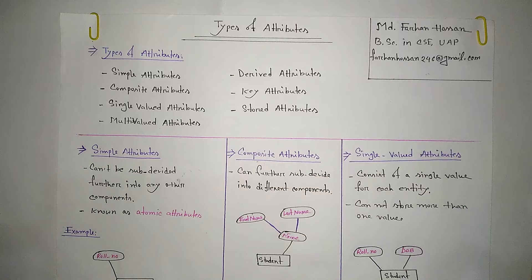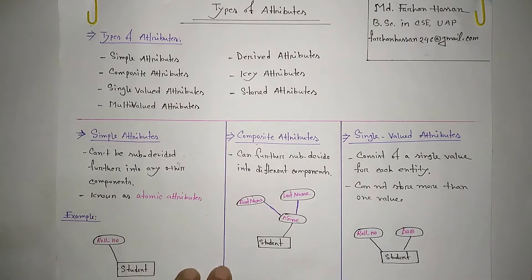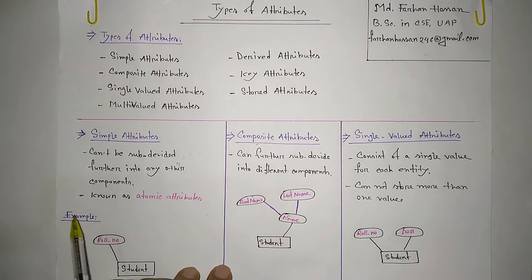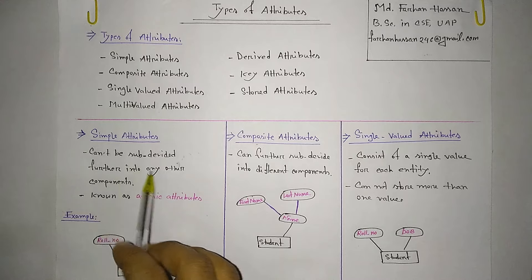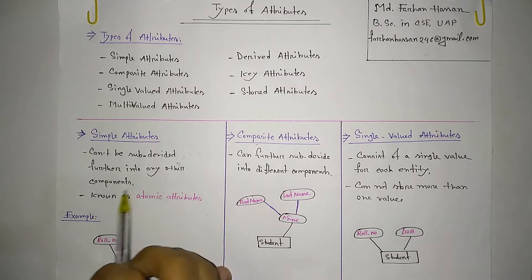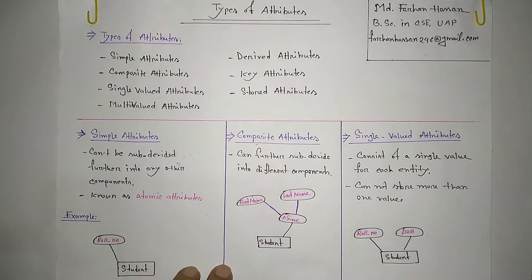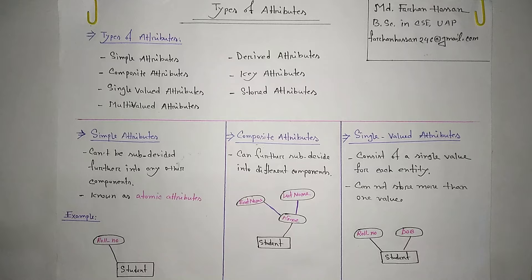We have stored attributes as another type of attribute. Let's look at examples. Simple attributes — simple attributes cannot be subdivided further into any other components. They are also known as atomic attributes.